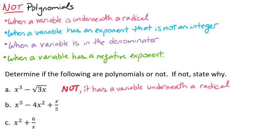Let's look at our next example. Here we have x to the fifth minus 4x squared plus x over 5. This is a polynomial because it doesn't have any negative exponents.